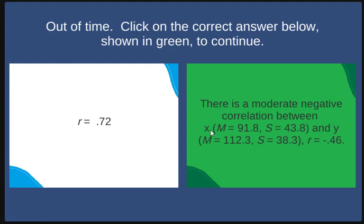You'll also be told about the two variables, in this case just labeled X and Y. You'll be informed about their mean and standard deviation. The mean is shown with an uppercase italicized M and standard deviation with an uppercase italicized S. And Pearson r is a lowercase italicized r.